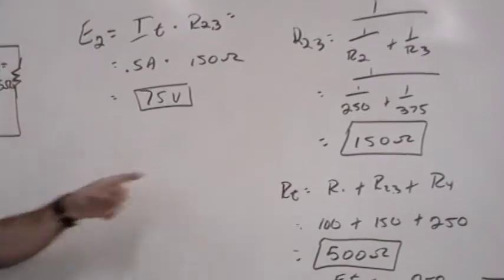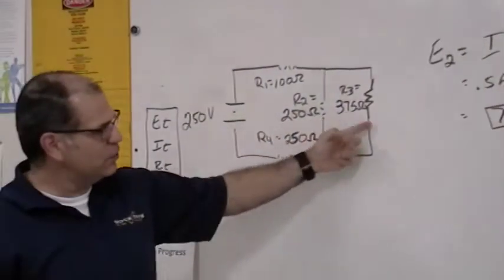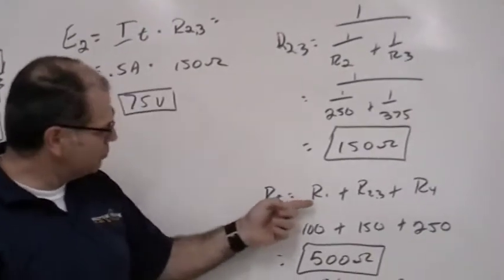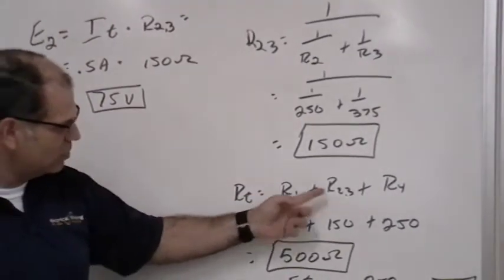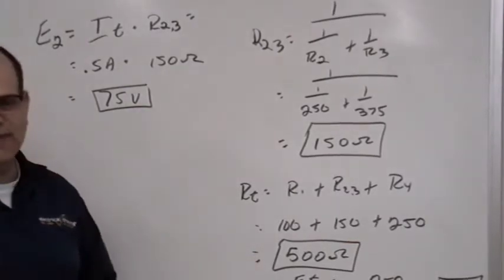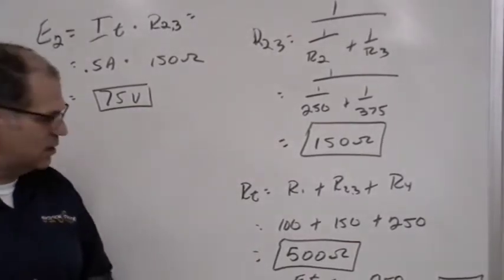Now, these other two resistors are in series with 2 and 3. So, the total resistance now is equal to R1 plus R2,3 plus R4, which gives us then a total of 500 ohms across the total circuit.